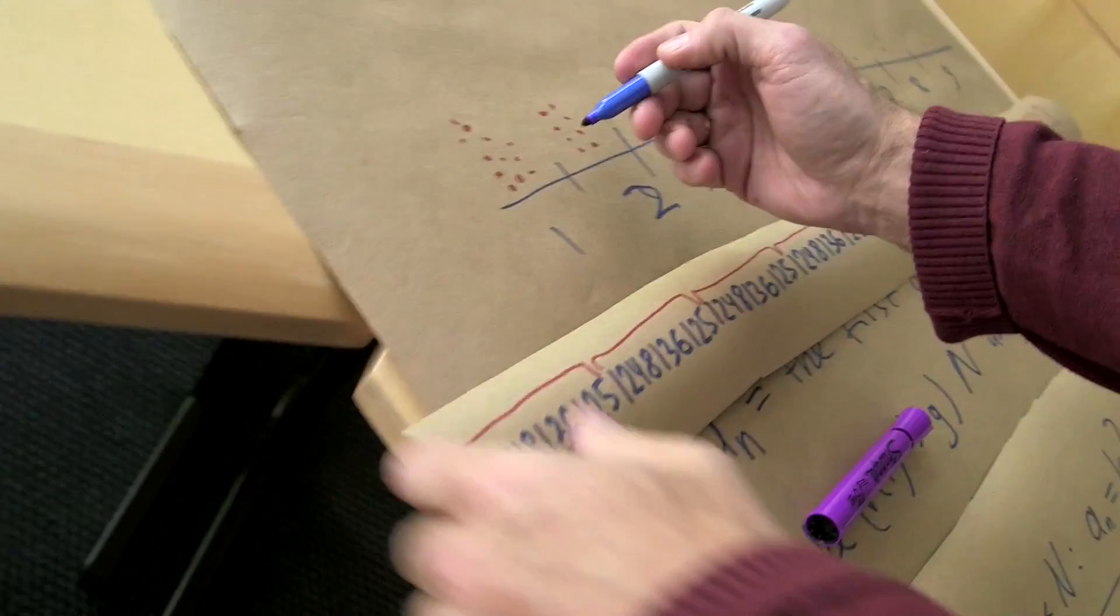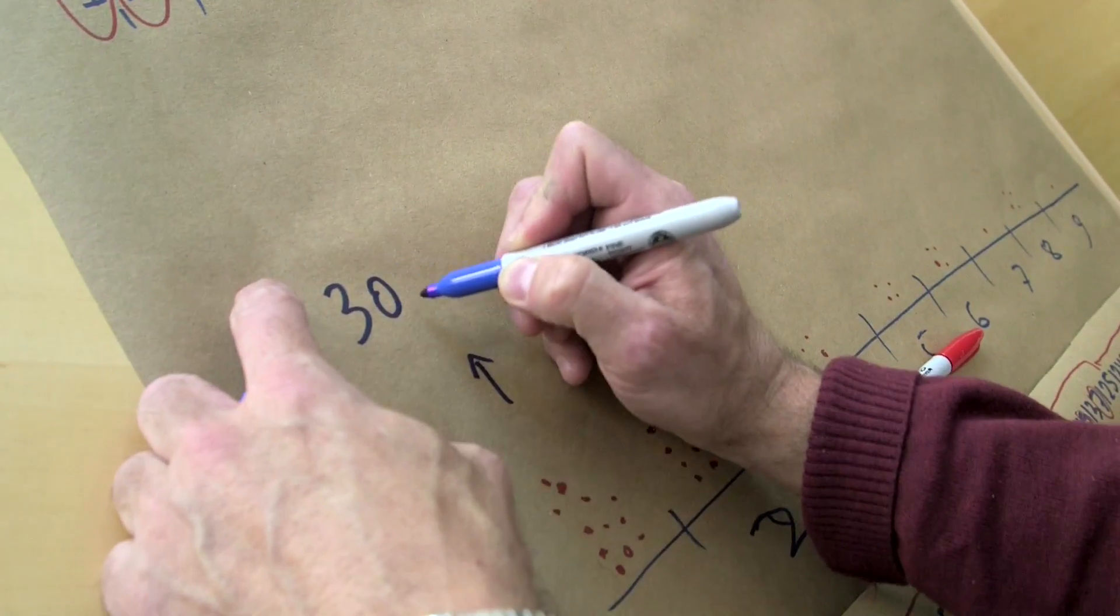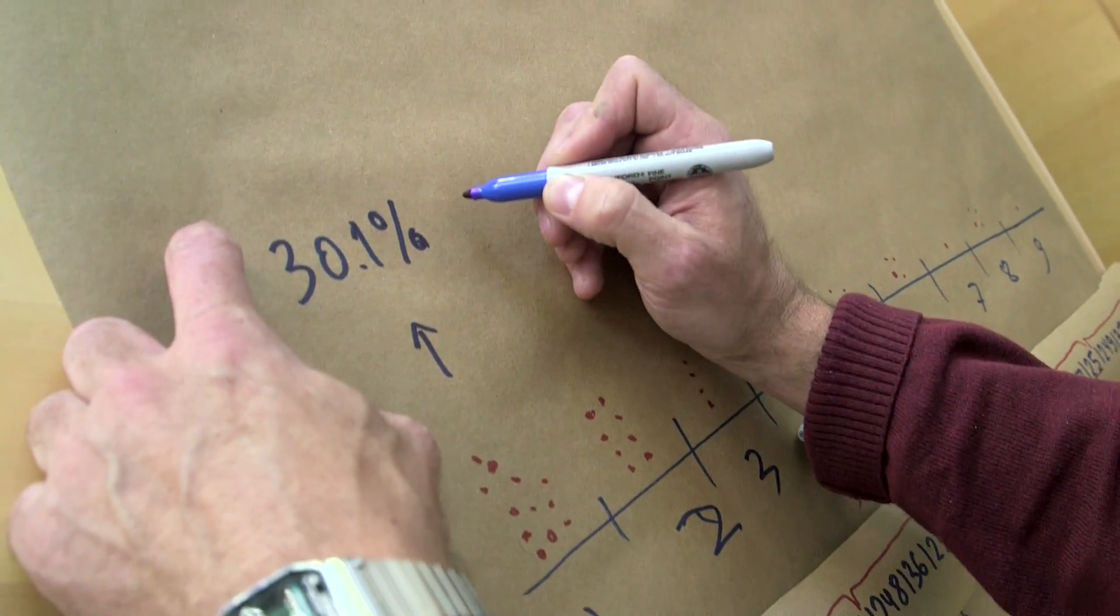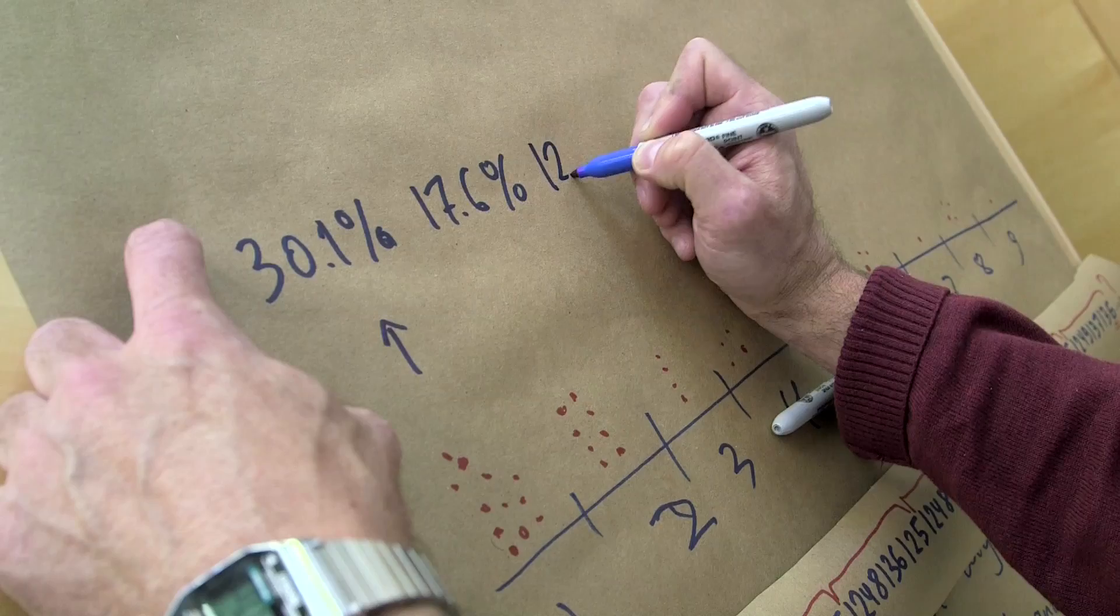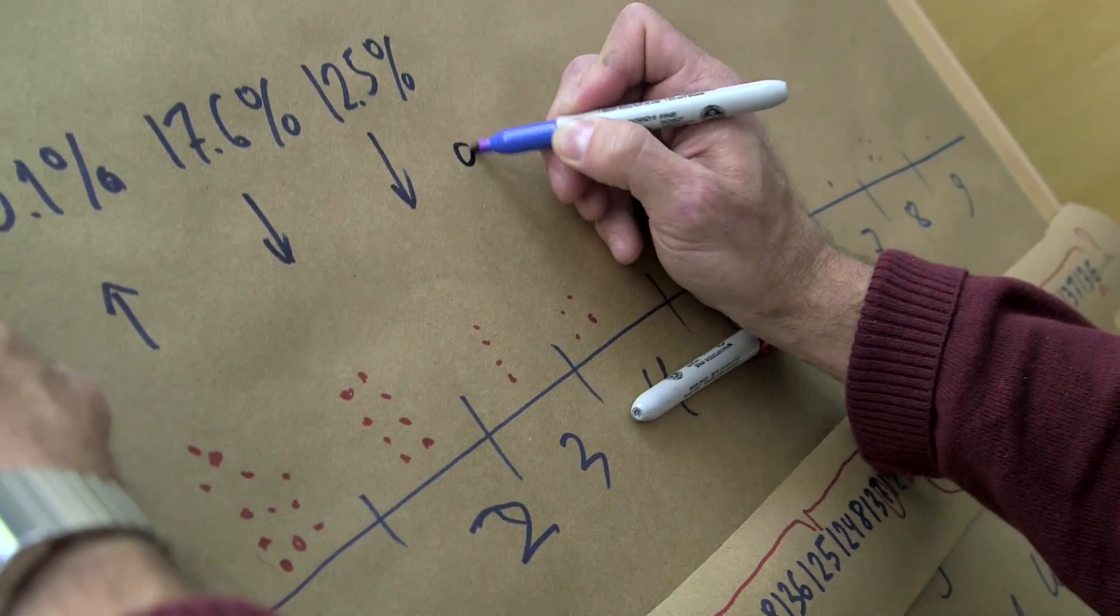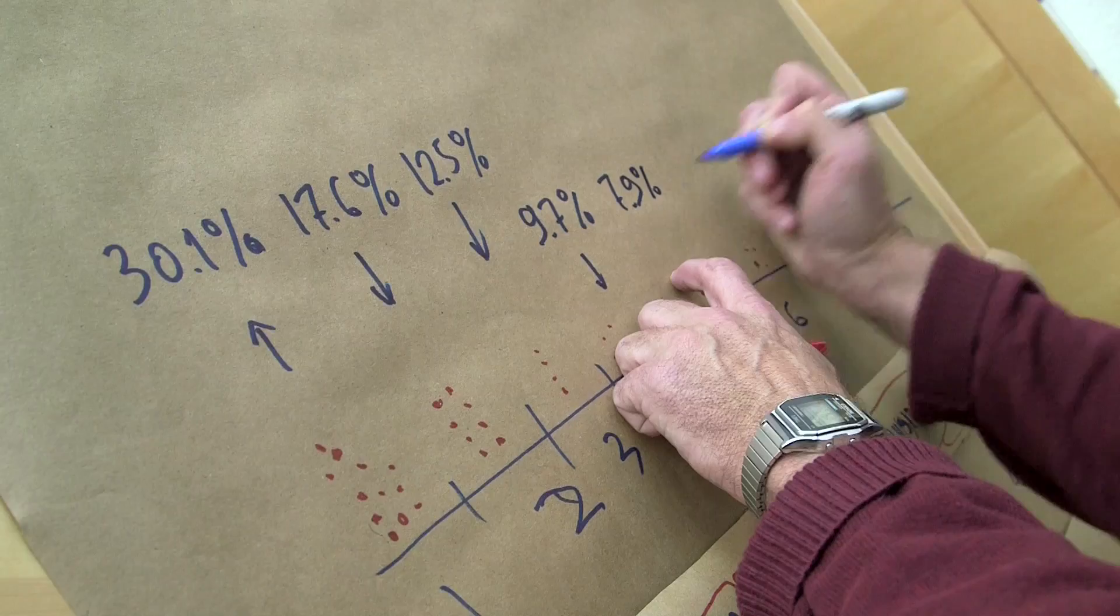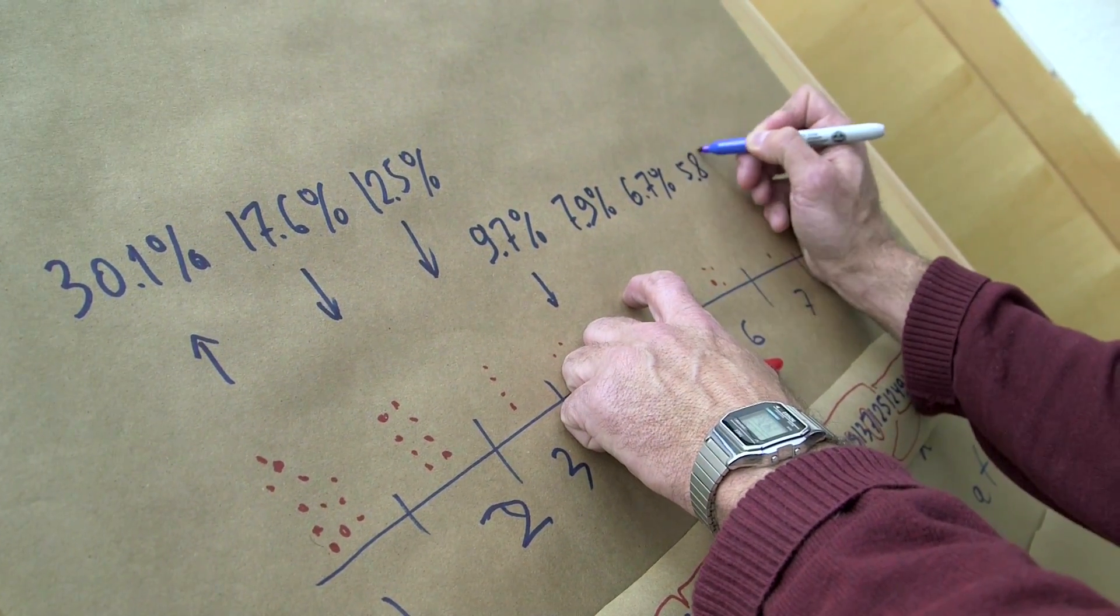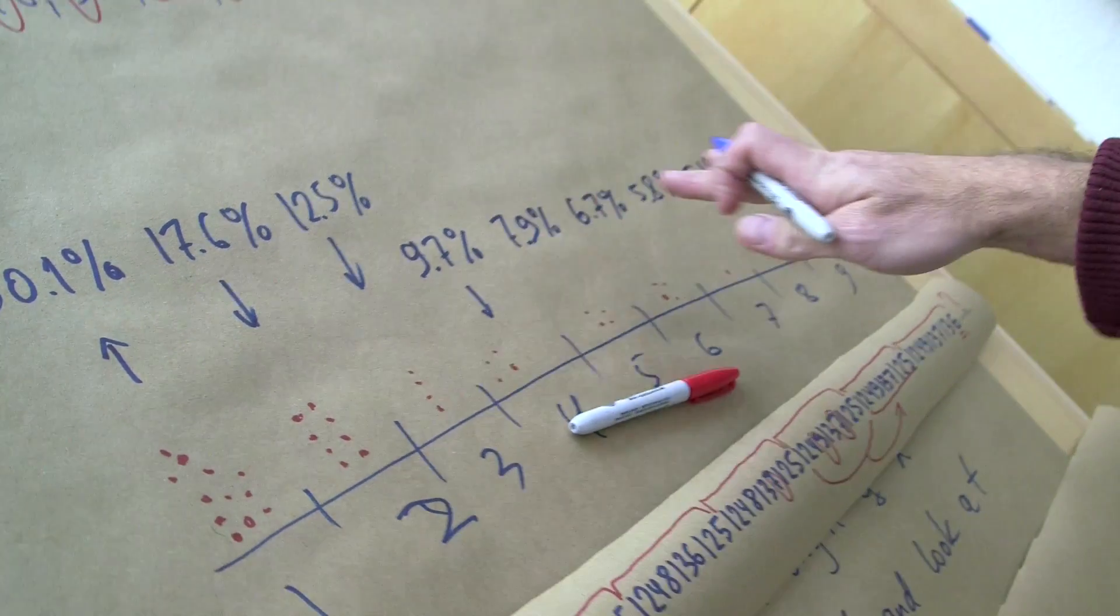This log 10 of 1 plus 1 over k what does it mean? It means that the number of all the proportion of ones eventually goes to 30.1% well approximately and here we have 17.6% and here we have 12.5 and fours get 9.7 and here we have approximately it's not exact figure it's approximate and here we have 6.7, 5.8, 5.1 and then 4.6 so it gets smaller and smaller.